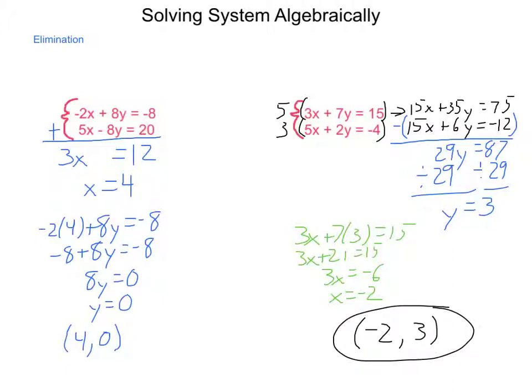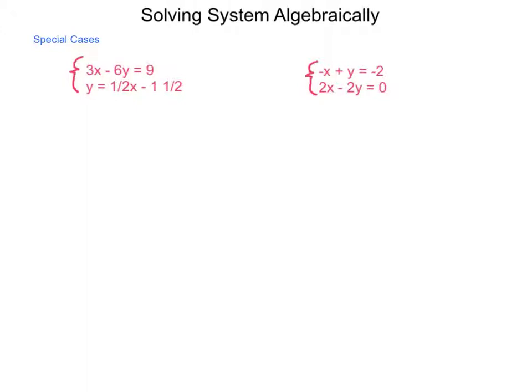When we are going through and solving systems of equations, we have special considerations, and we discuss these during the graphing and tables method: parallel lines or the same line written in two different ways. How do these show up in an algebraic method? Special cases of the systems of equations will be shown here. We have the system 3x - 6y = 9 and y = (1/2)x - 1.5.